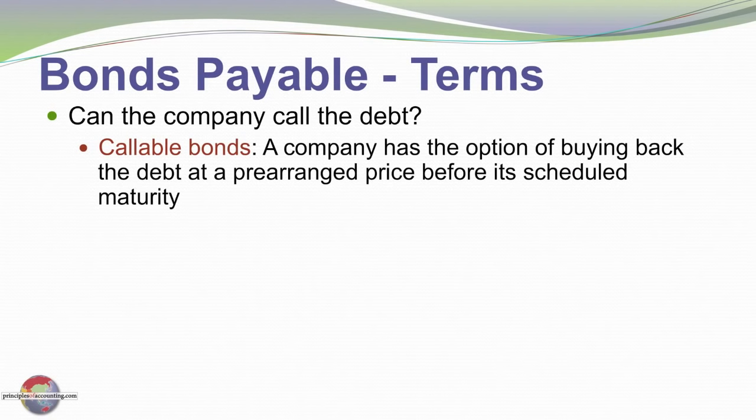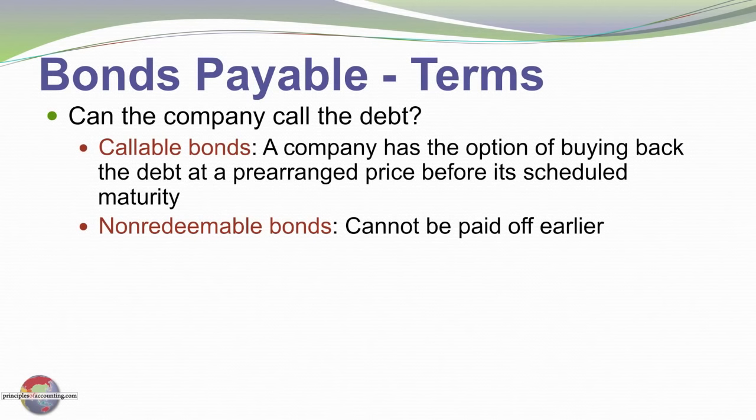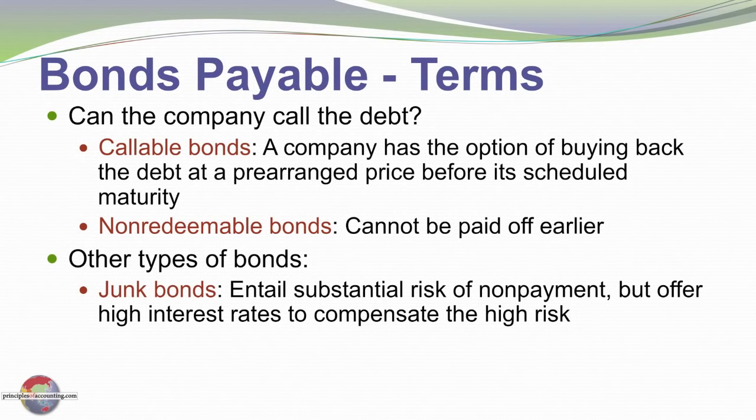Callable bonds enable a company, at a specific date and for a predetermined price, to call back the bond at face value or at some stipulated price — perhaps 105% of face value — essentially allowing the issuing company to pay off the debt early. Non-redeemable bonds are those that cannot be paid off early, assuring the holder they will keep the bond for its full life. This can be important if bonds are issued when interest rates are high, as it prevents the company from refinancing at lower rates. Non-redeemable bonds give investors comfort that they can lock in a yield for an extended period.